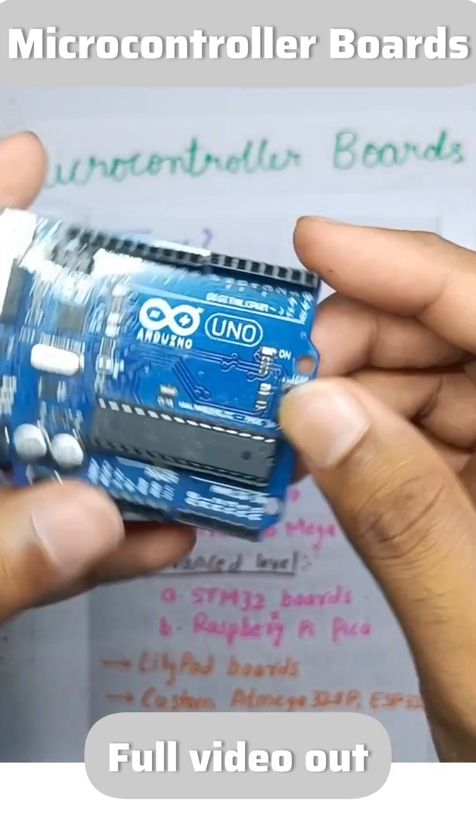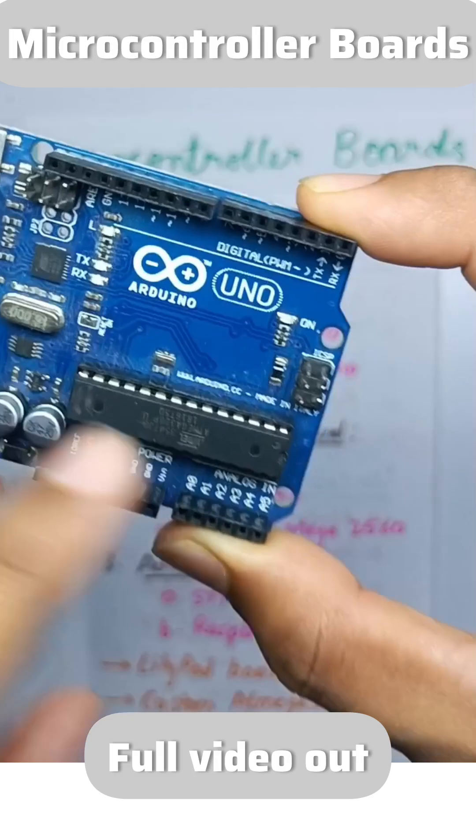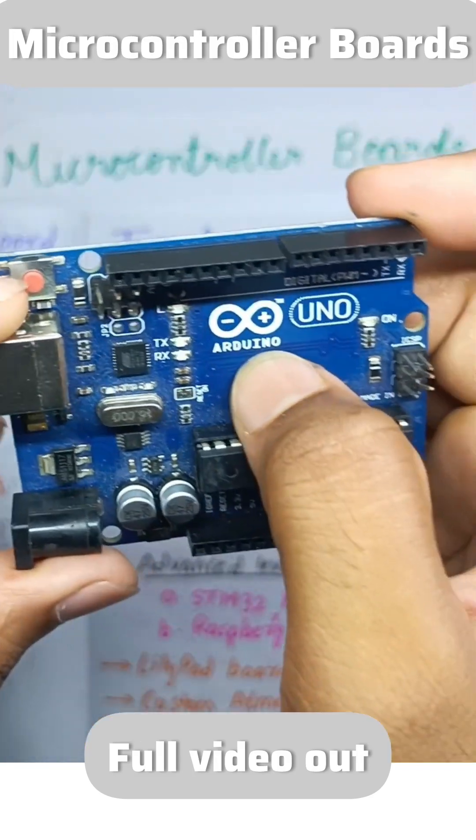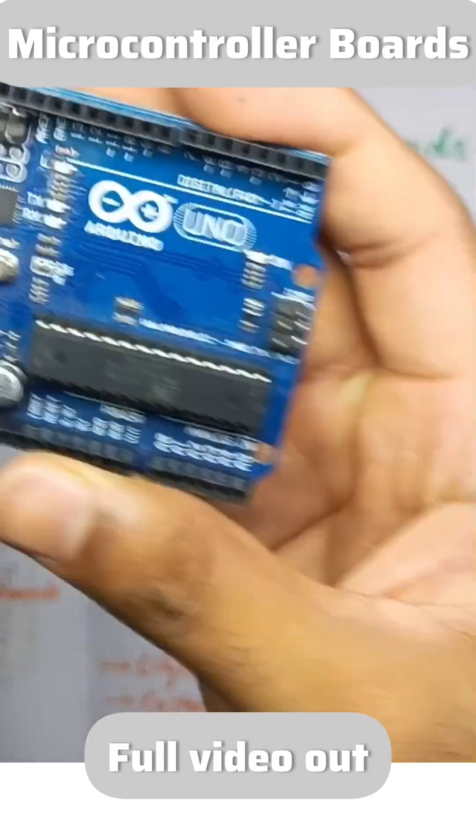This here is Arduino UNO board. Arduino is the company that produces these boards. UNO is the model name. So Arduino is the company that produces these boards, and UNO is the model name for this board. And this is Arduino UNO.